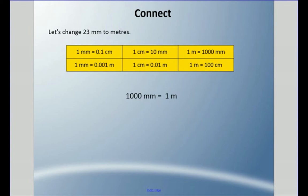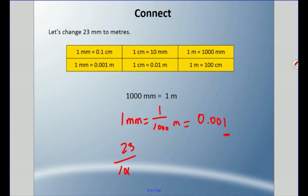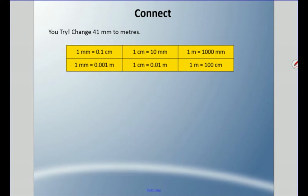Let's change twenty-three millimeters to meters. Remember, there are one thousand millimeters in one meter, so one millimeter is one thousandth of a meter. Twenty-three millimeters is twenty-three out of one thousand millimeters. The digit three in twenty-three must land on the thousandths place, which leaves a zero in the hundredths place. So twenty-three millimeters equals 0.023 — twenty-three thousandths of a meter.